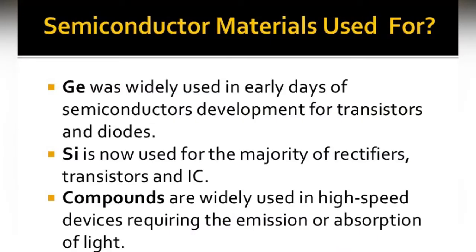Germanium was widely used in early days of semiconductor development for the construction of transistors and diodes. Silicon is now used for the majority of rectifiers, transistors, and integrated circuits. Compounds are used in high-speed devices and in devices which require the emission or absorption of light, for example LEDs. Comparing silicon and germanium, the most commonly used semiconductor is silicon.